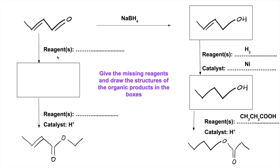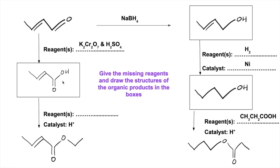So to turn this into the carboxylic acid, we need to oxidise it. The oxidising agent is acidified potassium dichromate — you could just put H+ there if you wanted to. So the carboxylic acid is going to look like that. And then obviously to generate the ester, we need to react the carboxylic acid with one, two — so ethanol this time.